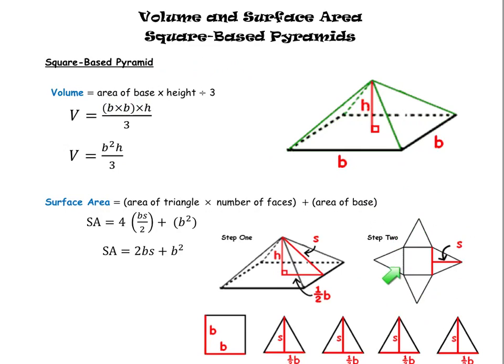From that you can see that you'd be taking the area of triangles, and there are actually four of these triangles, so you would take the area of those four triangles, and then you would add the area of the base. The area of the base is exactly the same as above. This is a square-based pyramid, so the area of this base is B squared.